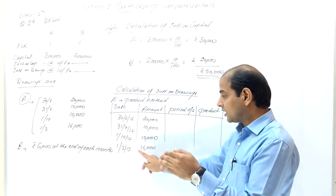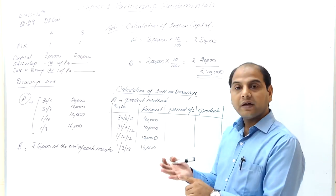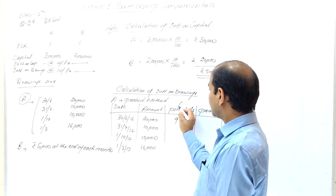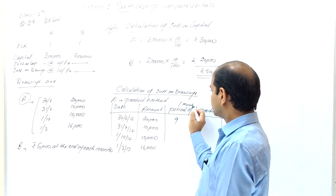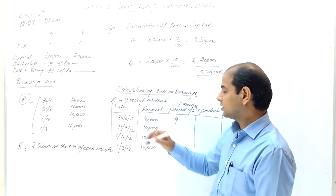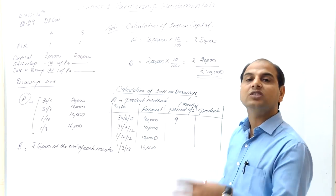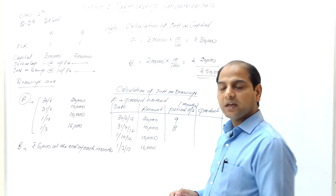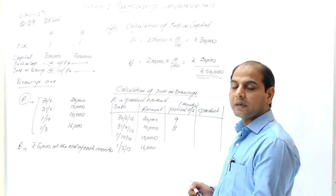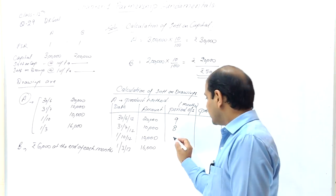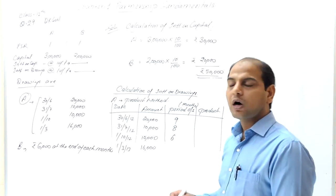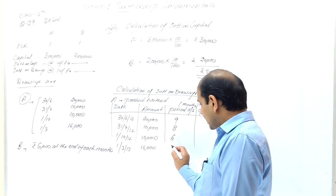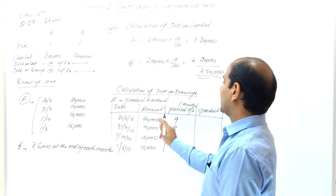Now, period outstanding: if drawing is on 30th June, months remaining to 31st March = 9 months. After 31st July, 4 months have passed so 8 months remain. For 1st October: October, November, December, January, February, March — 6 months remain. For 1st March, only 1 month remains until year end.